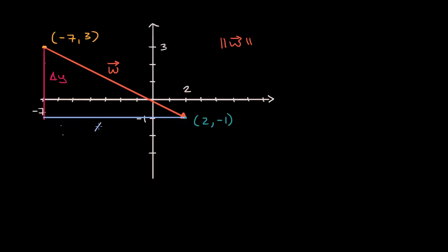Change in x. And we know from the Pythagorean Theorem that the length of the hypotenuse, which would be the magnitude of our vector, that is going to be equal to the square root of our change in x squared plus change in y squared.